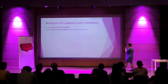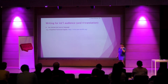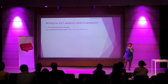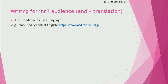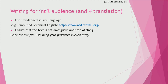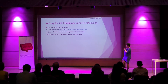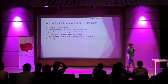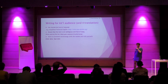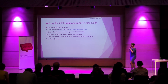What Dagmara mostly covered, I'll go through very quickly. If you're writing for an international audience and for translation, basically don't do it the wrong way. Use standardized source language — I don't have to advertise STE, Simplified Technical English, to you. I'm a great fan of it. Make sure the text is not ambiguous and is free of slang. Stick to consistent terminology — Dagmara also mentioned it. If you say an operation is to 'enter data,' then it's 'enter data,' not 'type data' from time to time.